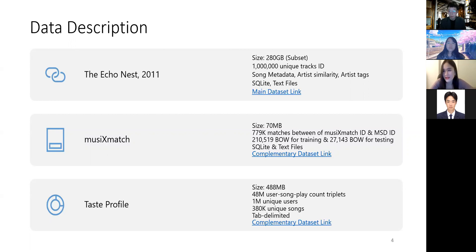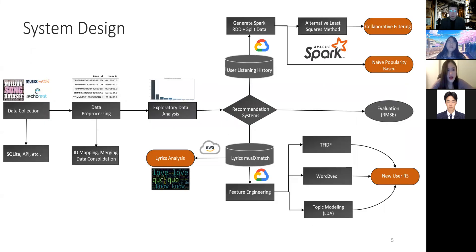Now I'm going to talk about the system design. First we collect the data, then we preprocess the data and perform some exploratory data analysis. Then we build a recommendation system based on two algorithms: collaborative filtering and content-based recommendation. We also did some lyric analysis.